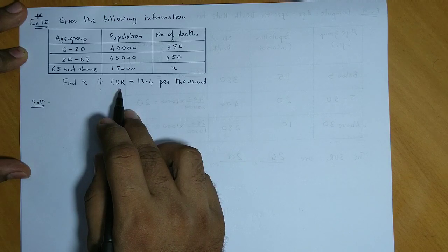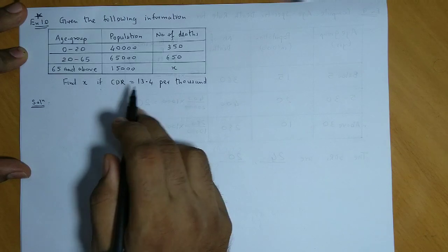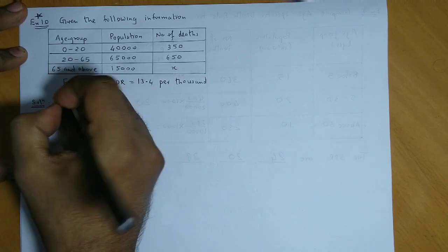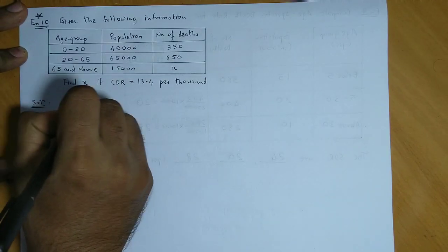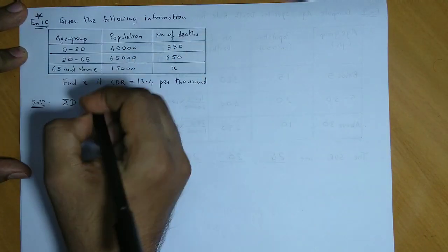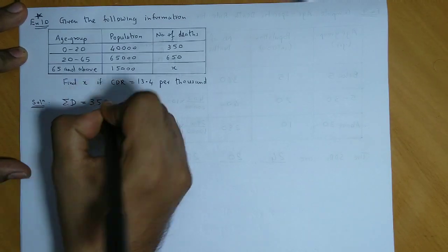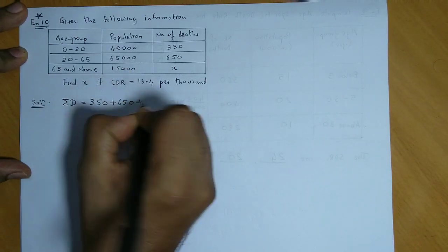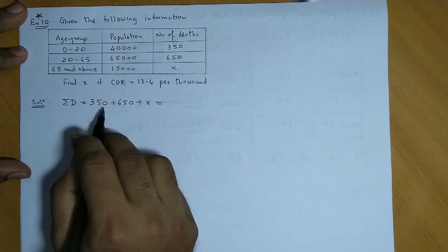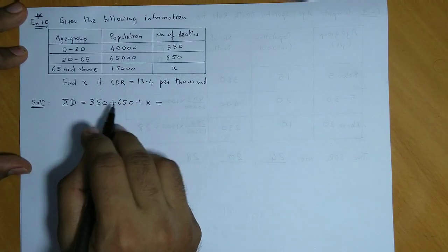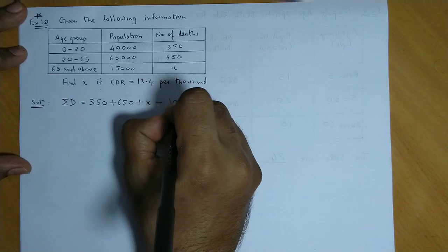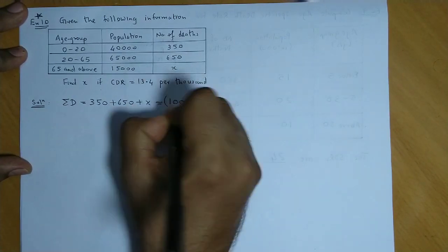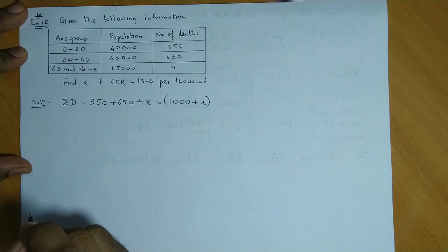The formula for CDR is: summation of D upon summation of P, multiplied by 1000. First, we find summation D, which is the total deaths: 350 plus 650 plus x. Now 350 plus 650 equals 1000, so summation D equals 1000 plus x.